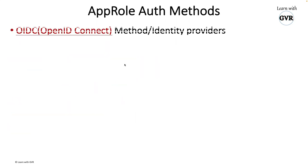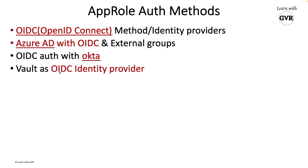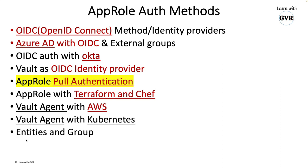From the vault authentication methods perspective, there are many AppRole authentication methods. Per the documentation: OpenID Connect with Azure AD, OIDC with Okta as an identity provider, vault as OIDC provider, AppRole pull authentication, AppRole with Terraform and Chef, vault agent with AWS, vault agent on Kubernetes, entities and groups, and custom plugins. There are hundreds of use cases, but the simplest is AppRole pull authentication.